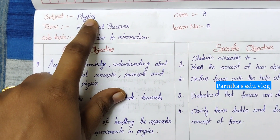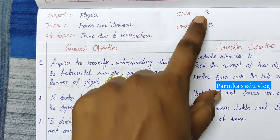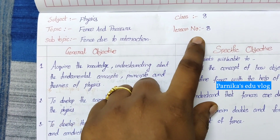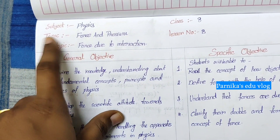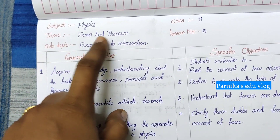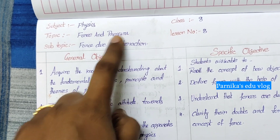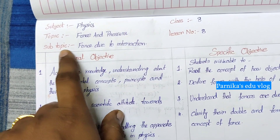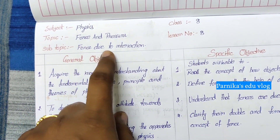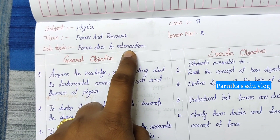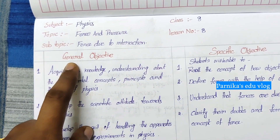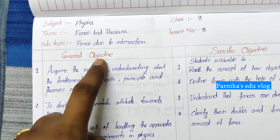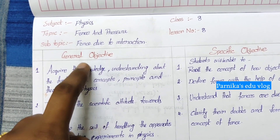Name of the subject: Physics. Class 8, Lesson No. 8. Topic name is Force and Pressure. Subtopic is Force Due to Interaction. First we have to write the general objective.